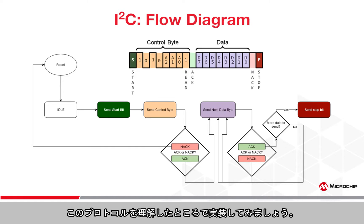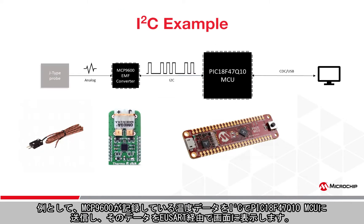I went ahead and made a flow chart that should hopefully simplify the process. Looking more closely, we can see the bus can basically be modeled as a finite state machine. Now that we have a firm understanding of the protocol, let's try to implement it. For this example, I'm simply going to read temperature data being logged by an MCP9600 to the PIC18F47Q10 microcontroller over I2C and then display the data to my screen over USART.